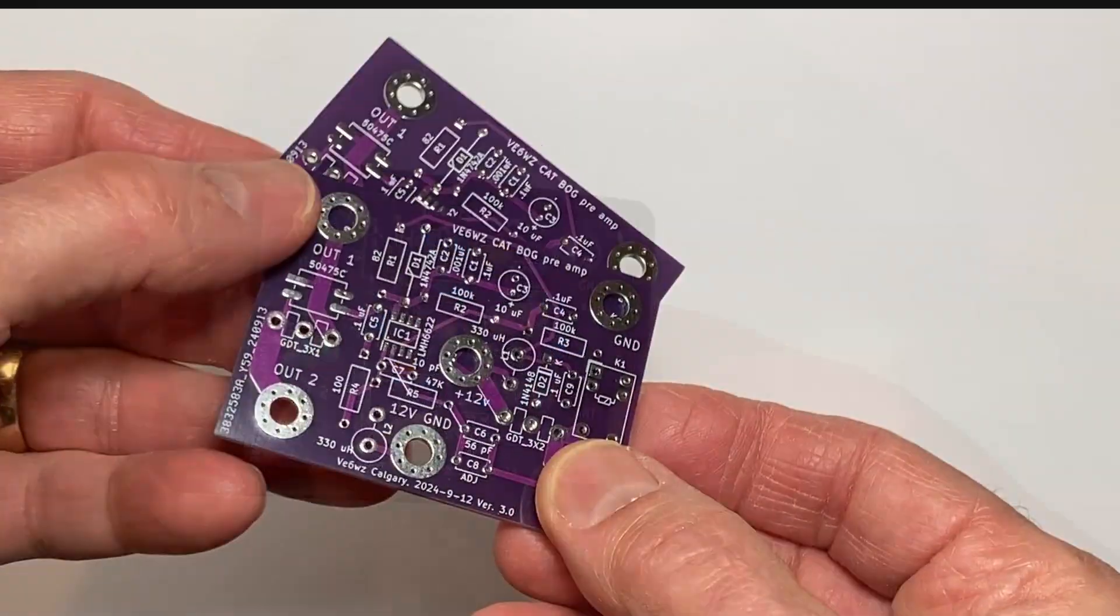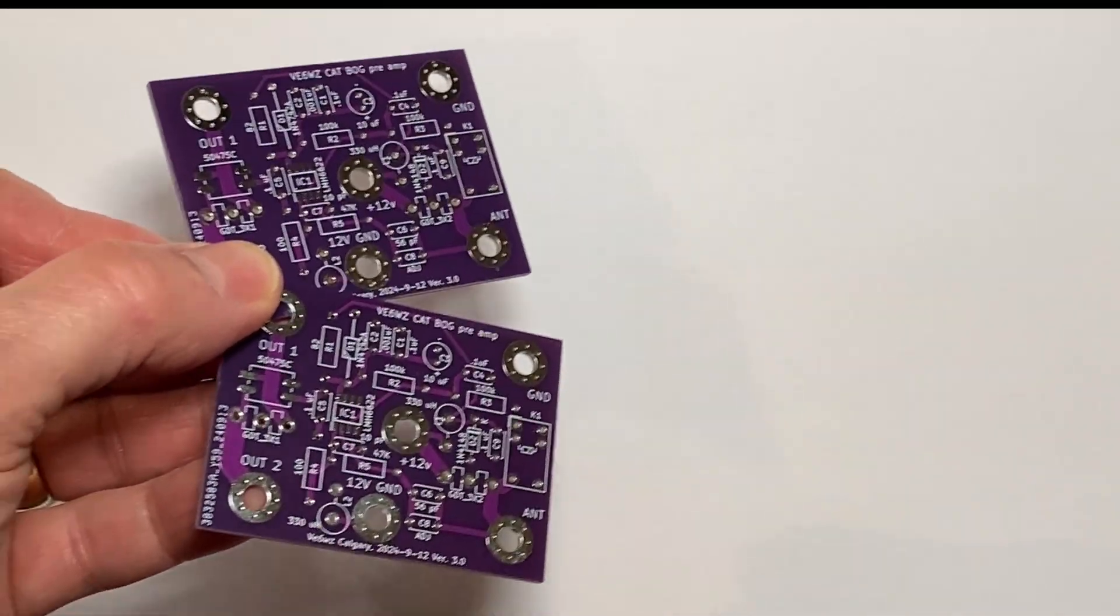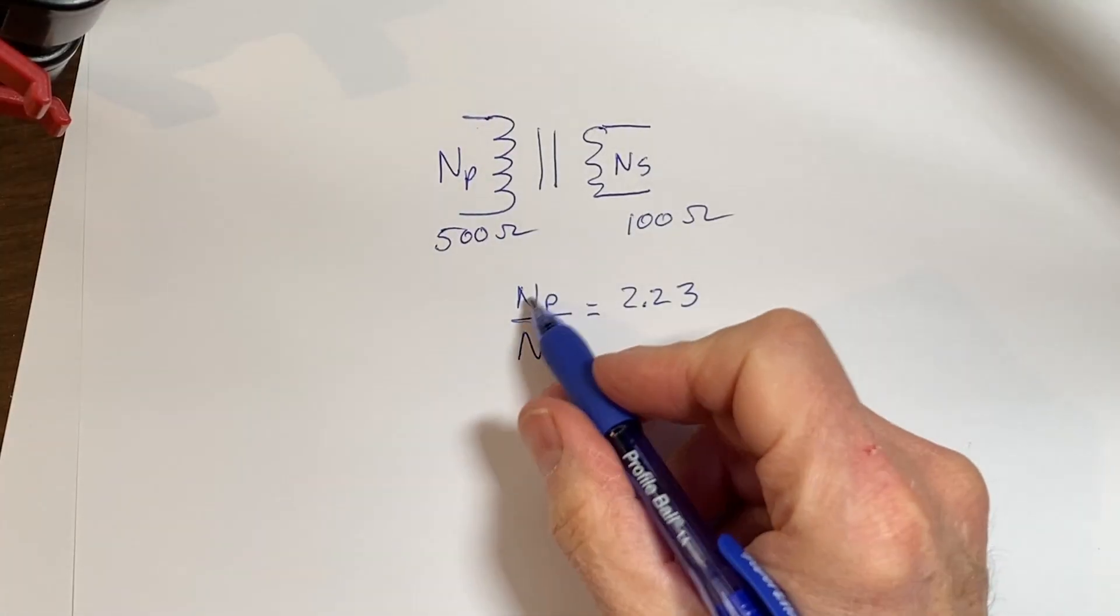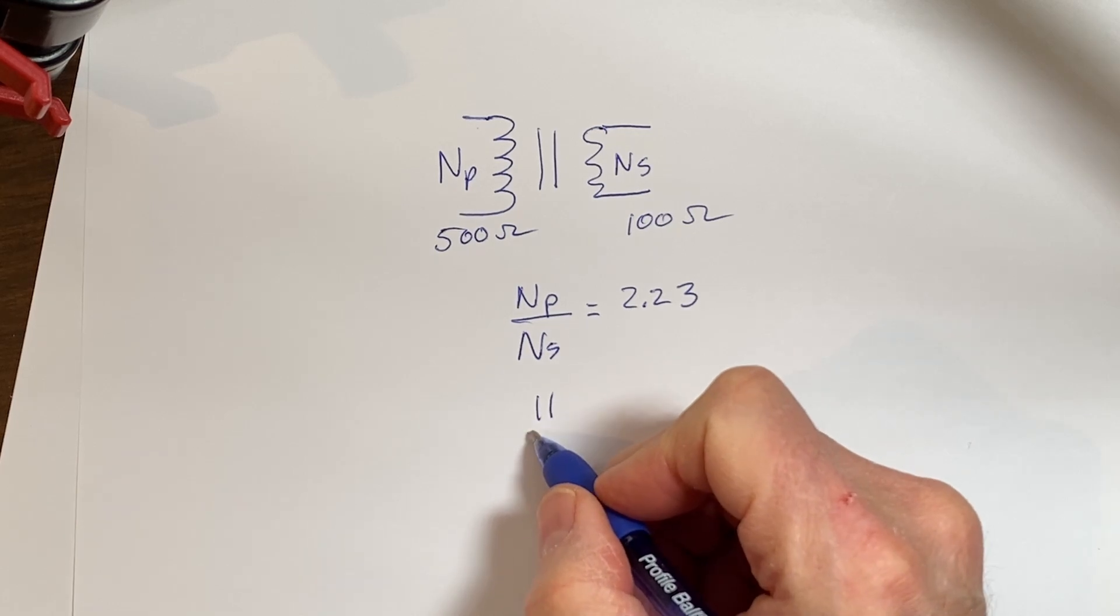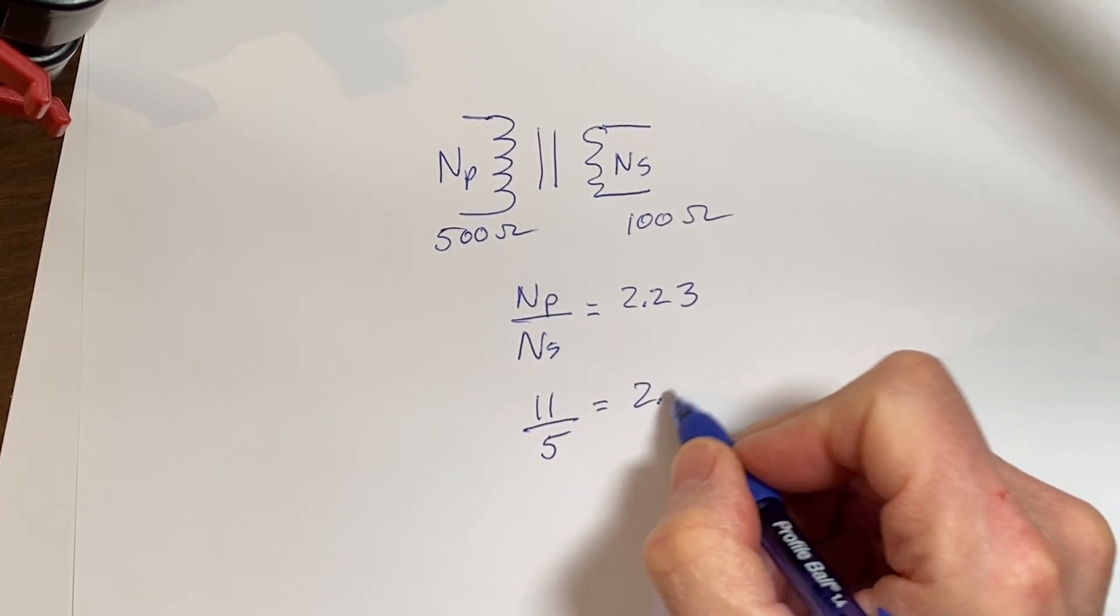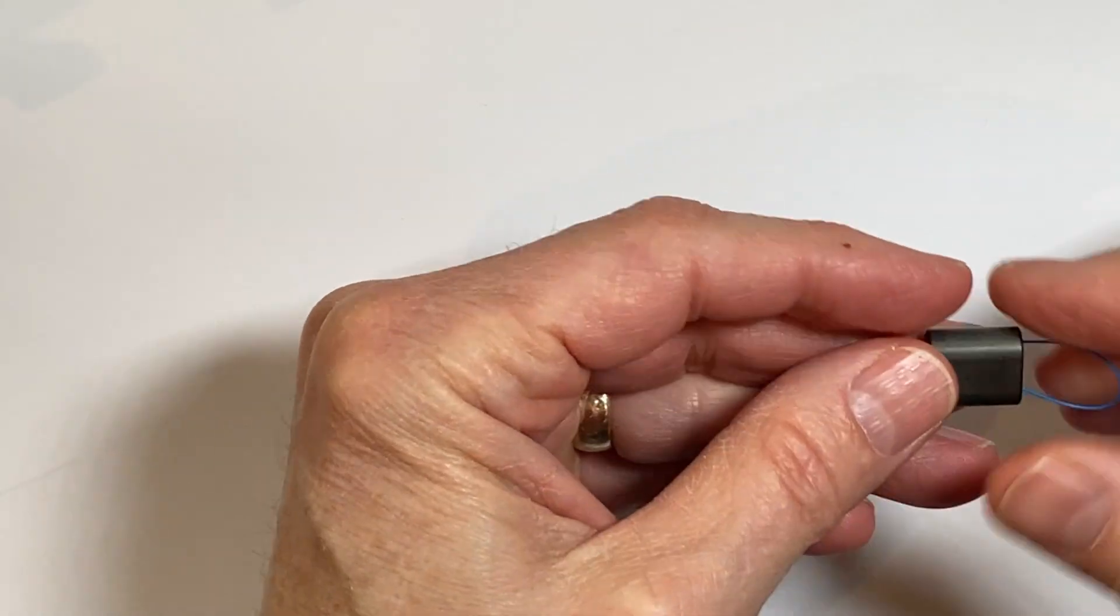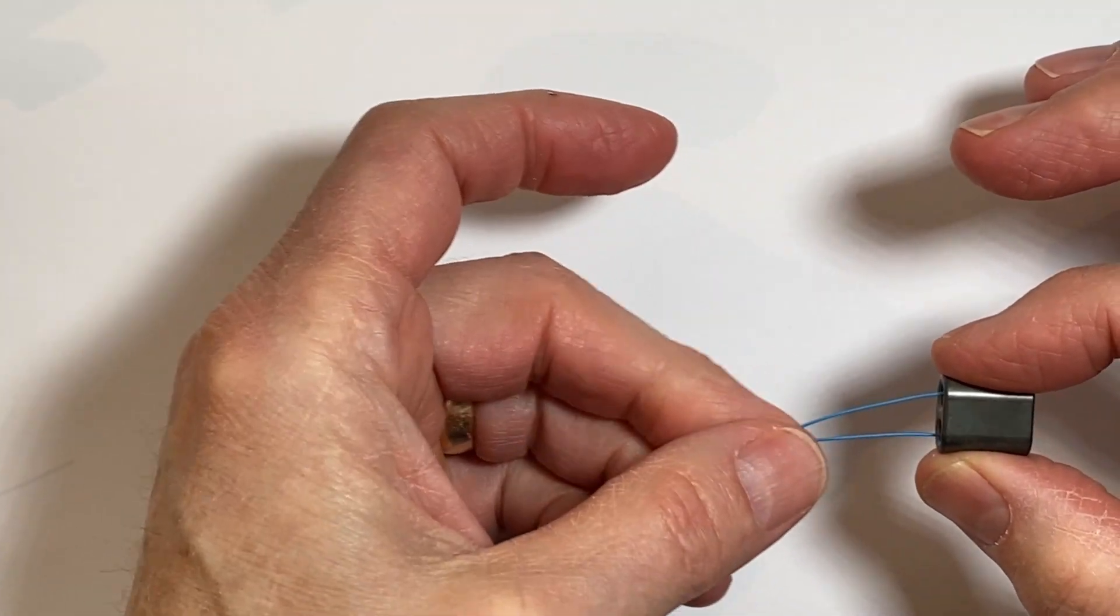It can be used for various broadband antennas such as short verticals or low near the ground beverages. I'll also describe how to calculate and wind your own transformers to passively match the impedance of any antenna to the CAT6 and to transform that 100 ohm twisted pair to match the 50 ohms back in the shack.